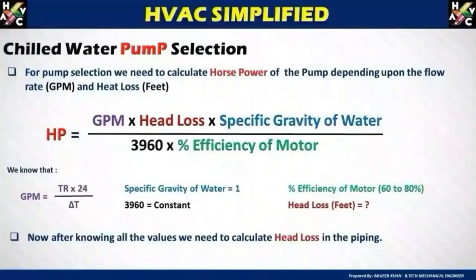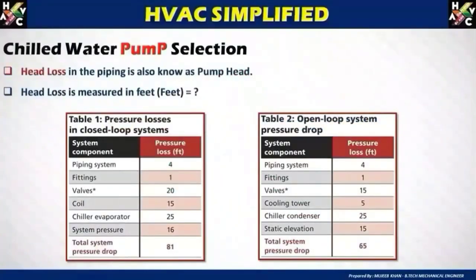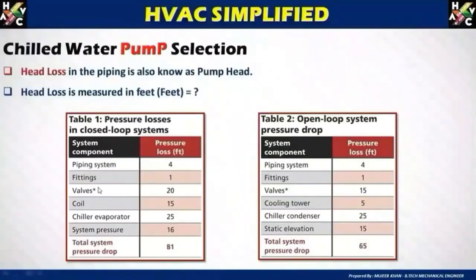Now I will show a simple example of an open loop system and a closed loop system — what parameters need to be calculated for head loss in the chilled water supply and return pipe. Head loss in the piping is also known as pump head, and is usually measured in feet, meters, and KPa. I have taken two examples in a table: table one covers pressure losses in a closed loop system, and table two covers open loop system pressure losses.